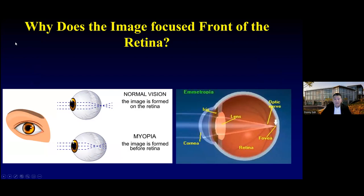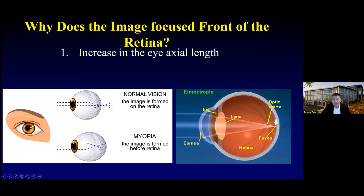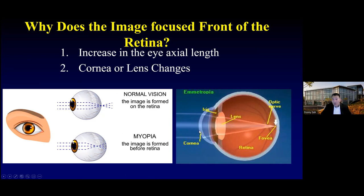Why does the image focus in front of the retina? Normally it should fall right at the fovea or the macula, right at the back of the eye. But in some patients it falls in front. There are mainly two reasons: one is that the eyeball has elongated — it's actually gotten longer — so the focal point has moved back further. Second is that something happened to the cornea or the lens making the light converge quicker so that the light doesn't fall at the macula but falls in front.